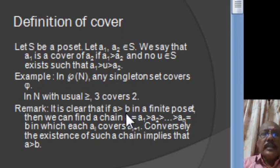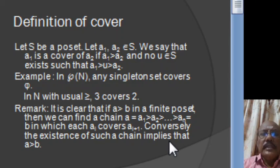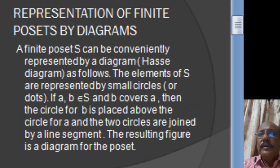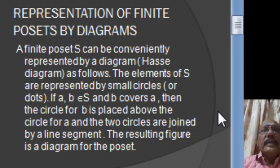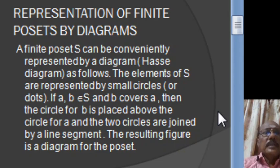It is clear that if A > B in a finite poset, then we can find a chain A = A1 > A2 > ... > Ak = B in which each Ai covers Ai+1. Conversely, the existence of such a chain implies that A > B by using the transitive property. Now, in graph theory, every graph can be conveniently represented by a diagram. In a similar way, a finite partially ordered set can also be represented by means of a diagram.